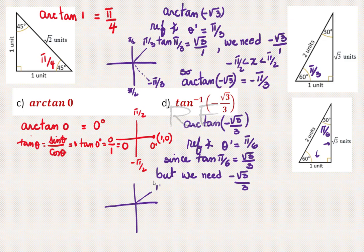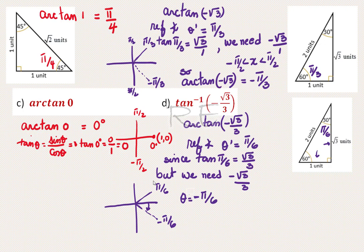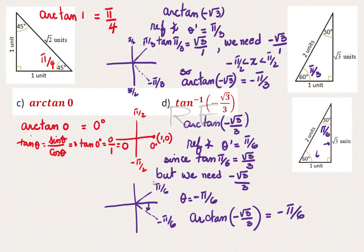We know that π/6 is our reference angle located in the first quadrant. From 0, we go clockwise and take negative π/6 as our angle, because negative π/6 is located strictly between negative π/2 and π/2, and it is the arc whose tangent is negative √3/3.